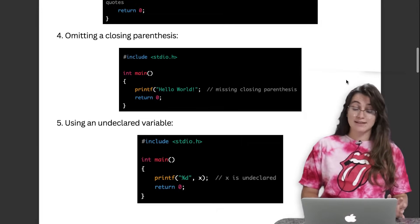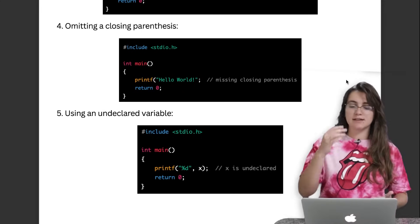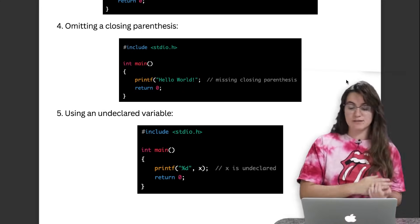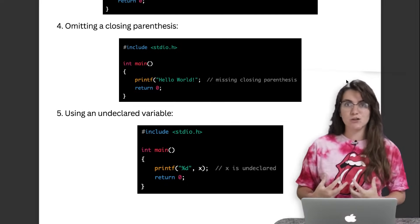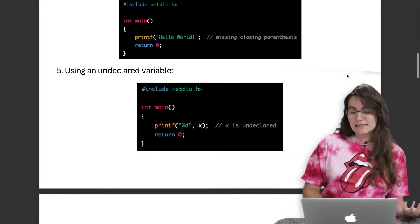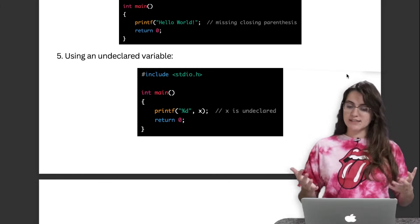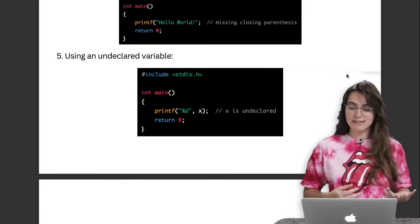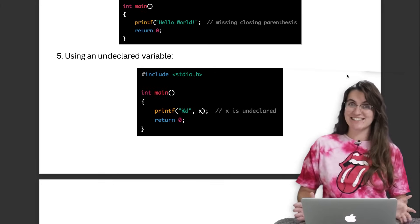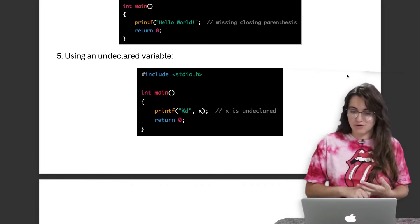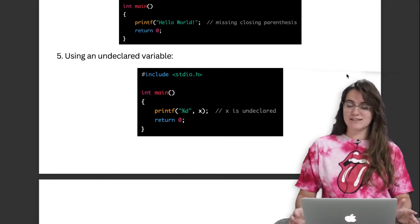The fourth example is omitting a closing parenthesis. Every time you have a function like printf, always check that you have the parentheses and closing curly brackets — it's really important to close everything you open. The last example is using an undeclared variable. If we try to print the value of variable x but never declared what x is — whether it's an integer, float, or string — this might crash your code. Always be aware of that.